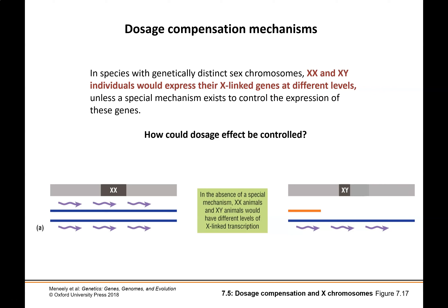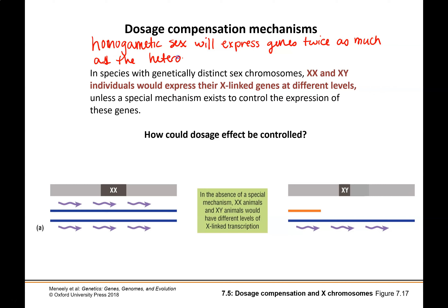Dosage compensation means that any homogametic sex individual would express X-linked genes twice as much as the heterogametic individual. In practice, if you are an XX individual you have twice the number of X-linked genes as an XY individual. If you express all of those genes, a female would be expressing X-linked genes at twice the level as a male, because there's no counterpart on the Y chromosome. Without a special mechanism to regulate this double expression, you would have individuals with an imbalance of gene expression.